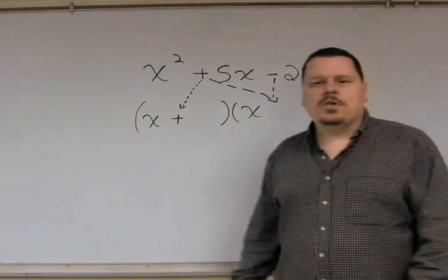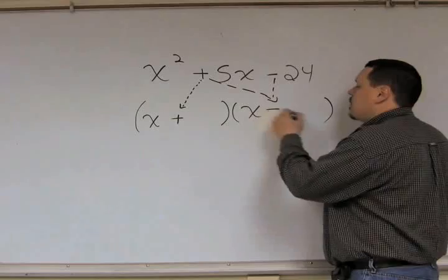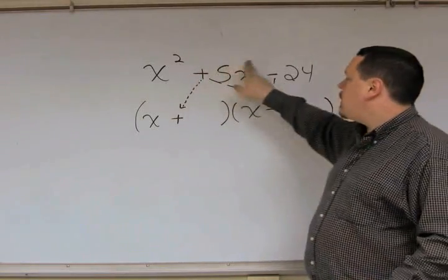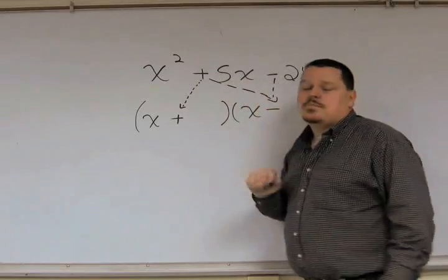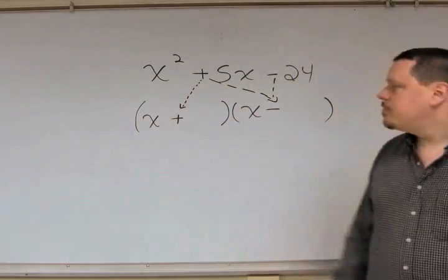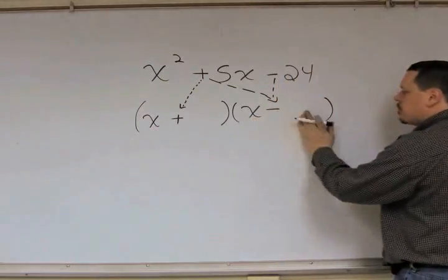Then, you are going to multiply your two signs together to determine this one. And, what do I mean by multiply? A positive times a negative is a negative. If this would have been a negative and a negative, you have negative times a negative would be positive. So, you look at these two signs and multiply them together. Positive, negative is negative. So, now we have x plus something and x minus something.